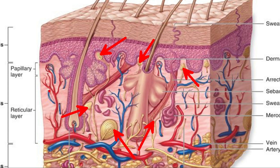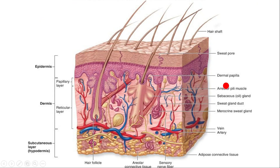The dermis is a connective tissue layer. The main components are connective tissue cells and connective tissue fibers. Other components include blood vessels, nerve receptors, nerve fibers, hair follicles, sebaceous glands, and the erector pili muscle.